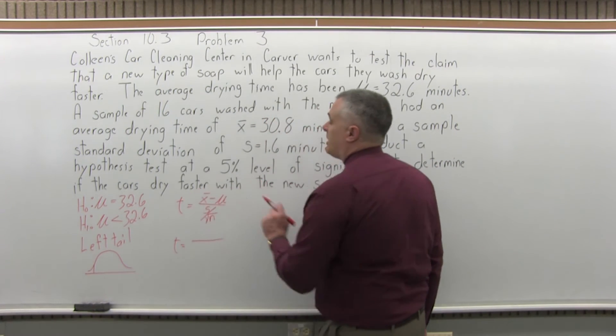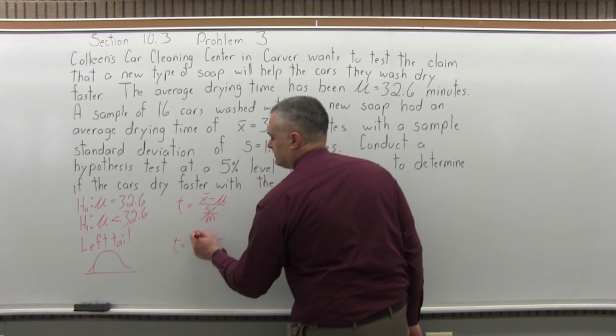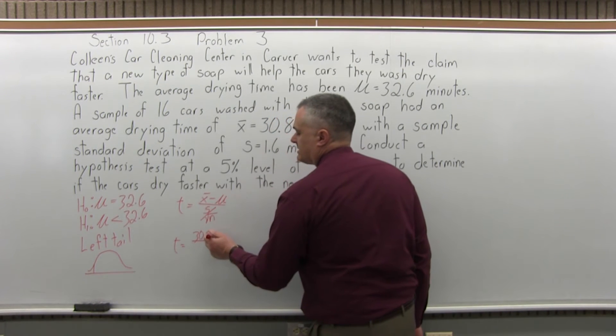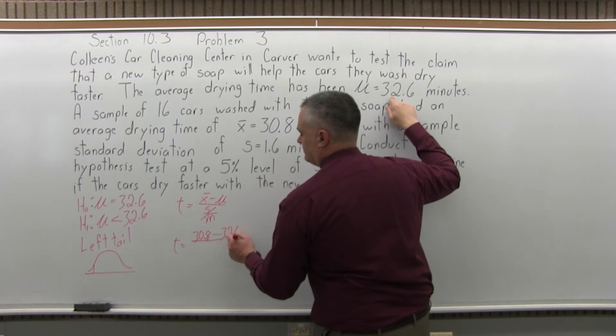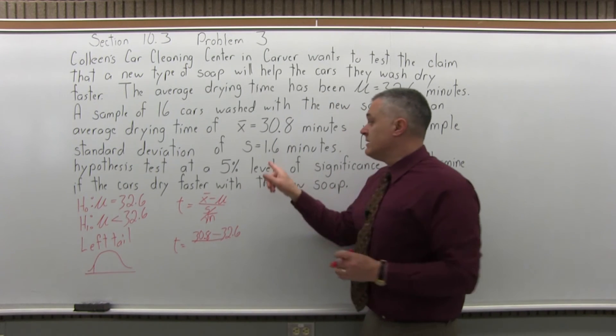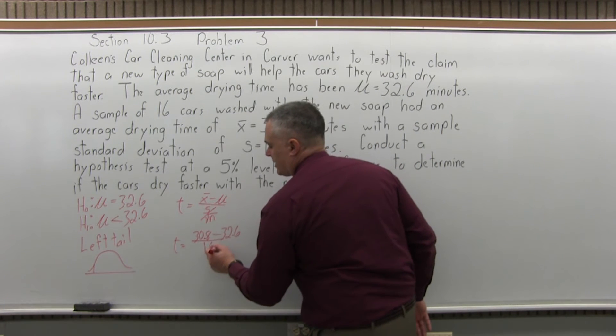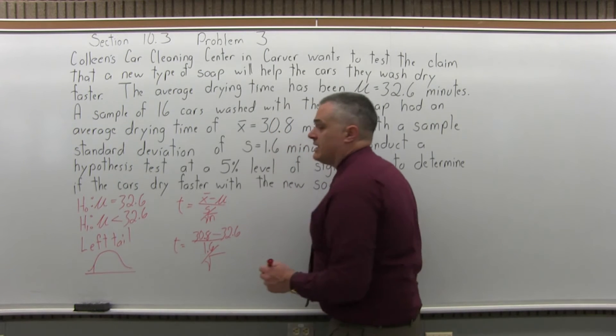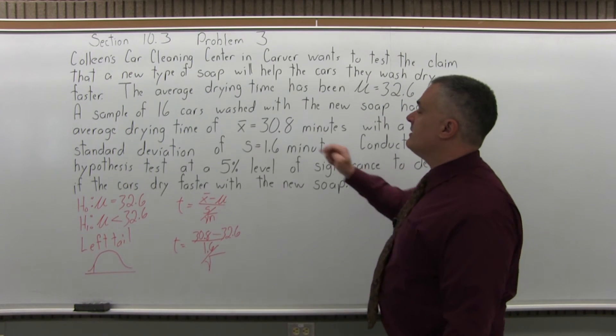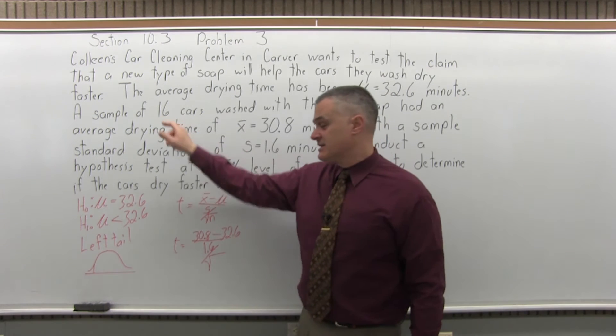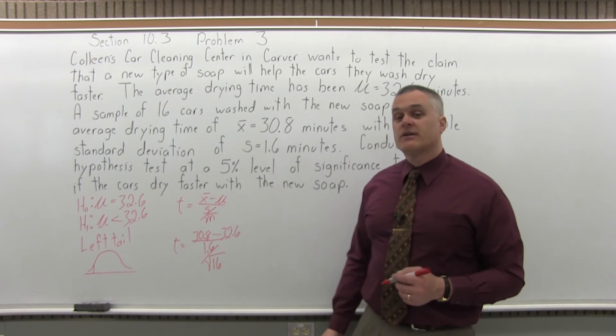T equals x bar. The value of x bar is given at 30.8 minus mu. Mu is given in the problem as 32.6 over s. S, the sample standard deviation is 1.6 divided by square root of n. n is the size of the sample. So, for this problem, our sample had 16 cars in it. A sample of 16. So, the sample size n is 16. Don't forget the square root. That's sort of a common mistake.